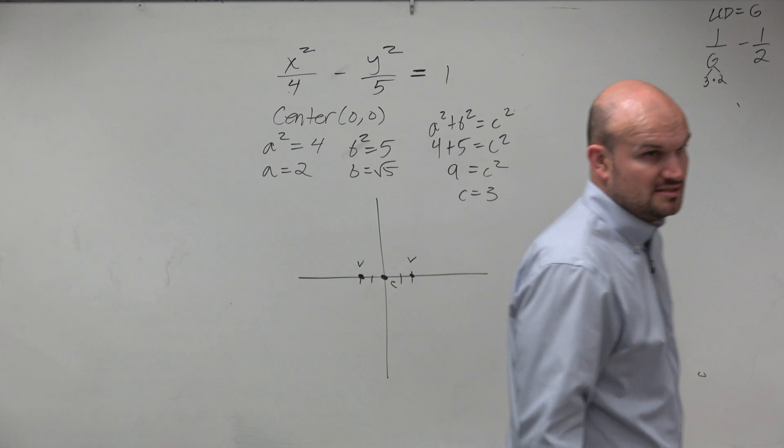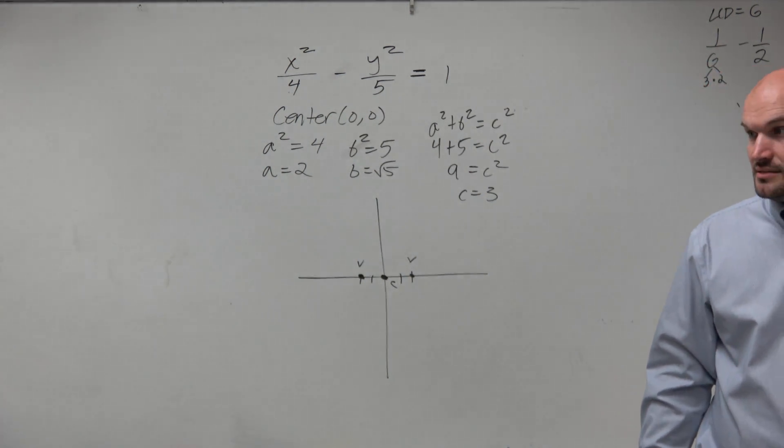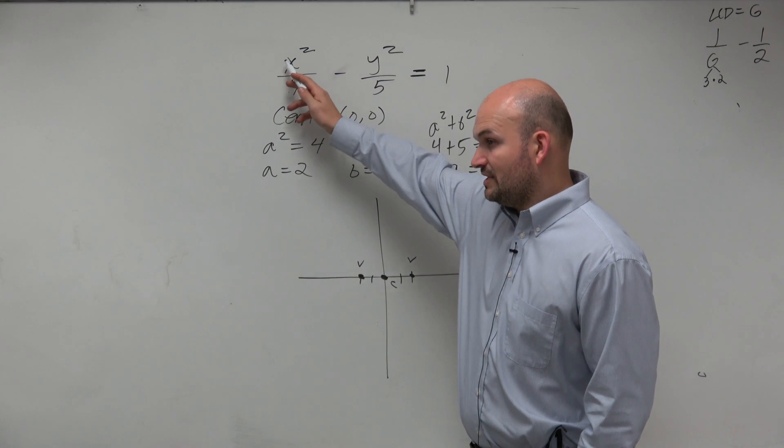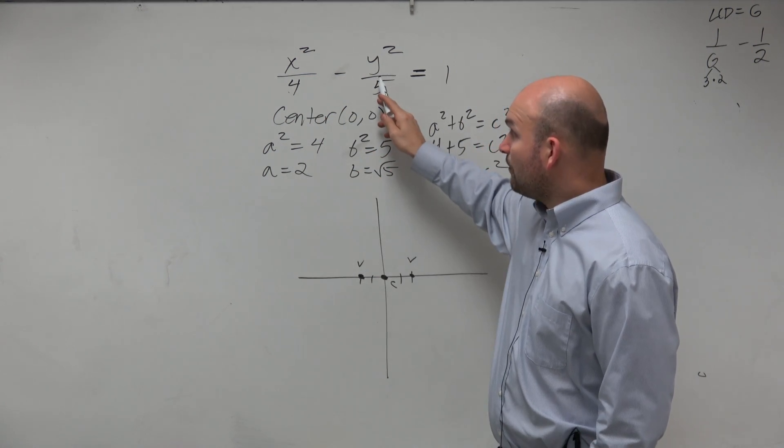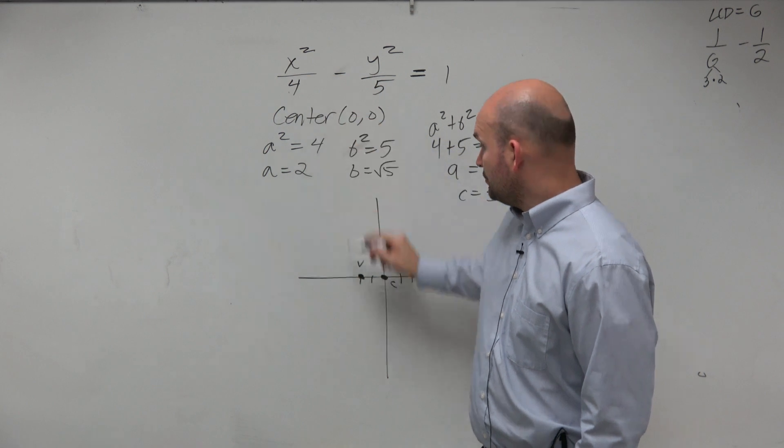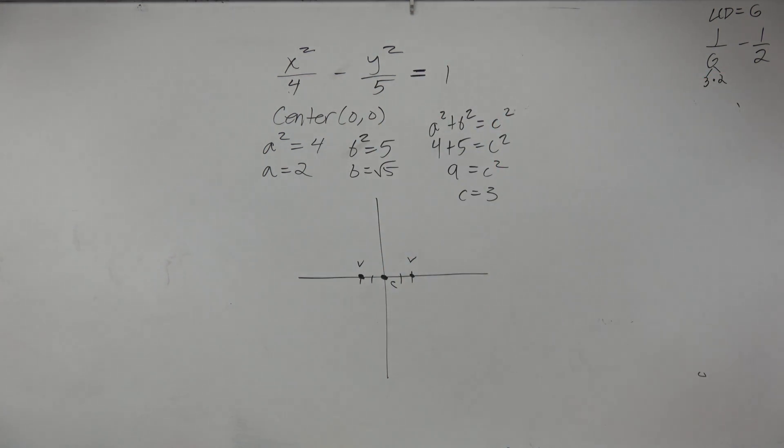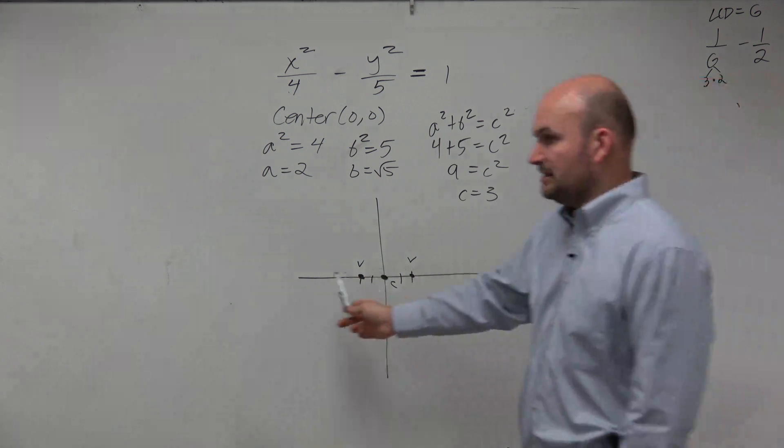Right? Does that make sense? Yes? No? a squared is under the x. That means you have a horizontal transverse axis. If a was under the y, like if y was over there, then you'd have a vertical. Remember, your vertices and foci all lie on the transverse axis. So they're going to be going left and right.